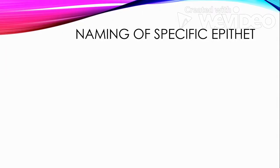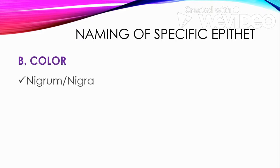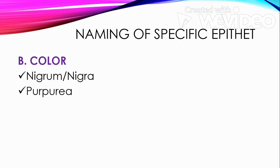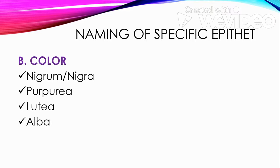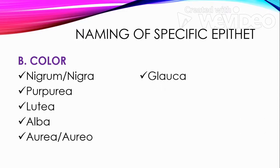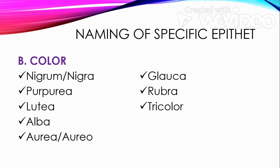Next, we have plants named according to characteristic color. Nigrum or nigra means black. Purpurea means purple. Lutea means yellow. Alba means white. Aurea or aureo means golden. Glauca means blue-tinted leaf color. Rubra means red. And tricolor means representing a three-color blend.